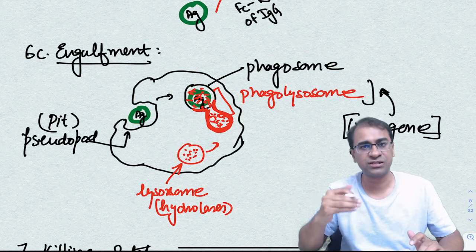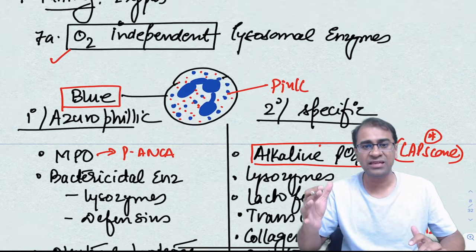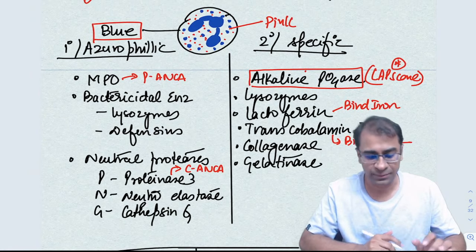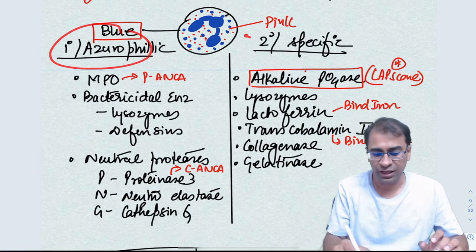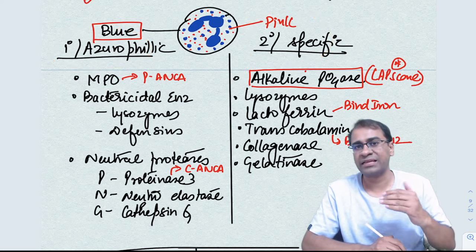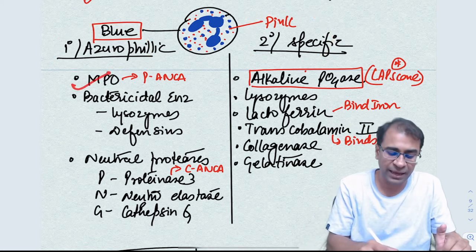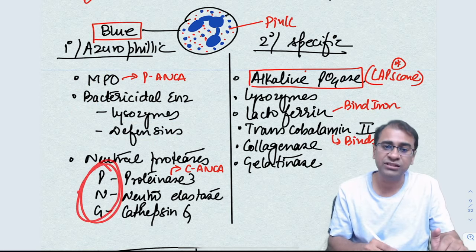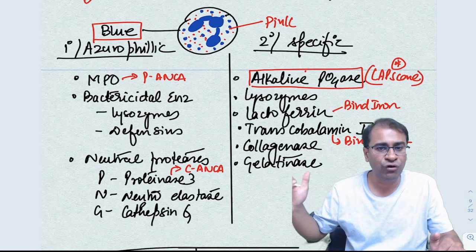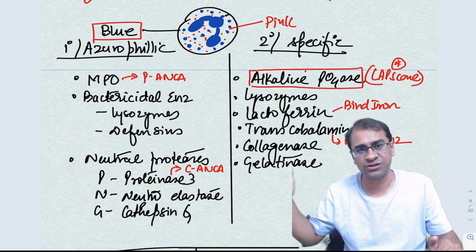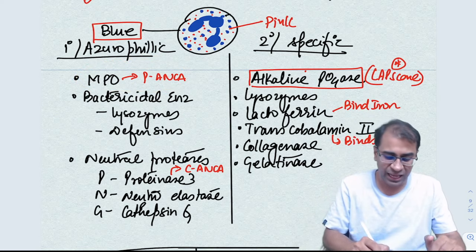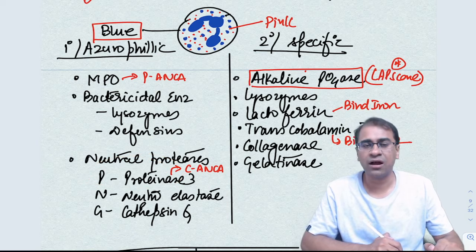Next step is killing. Killing is done by oxygen-dependent and oxygen-independent mechanisms. This you are seeing is oxygen-independent enzymes which comes from primary azurophilic or secondary specific granules. You must always remember the enzyme names of the primary granules, which is MPO and defensins. And simple pneumonia PNG: P stands for proteinase-3, N for neutrophil elastase, and G for cathepsin G. Remember, when the antibody forms like MPO, it is called P-ANCA, which we have read in vasculitis, and the antibody against this proteinase-3 is called C-ANCA, which we have also read in the topic of vasculitis.